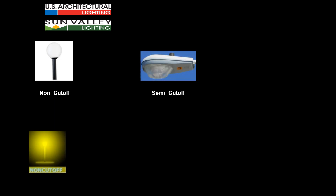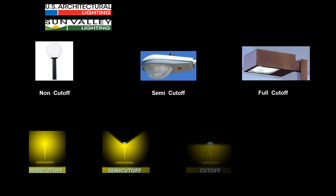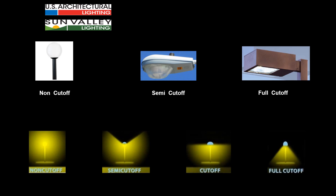Non-cutoff and semi-cutoff luminaires are fairly easy to understand because they allow light to go everywhere and stray and spray all over the place. Full cutoff and cutoff luminaires have attempted to eliminate this upward light and control light to a given site.